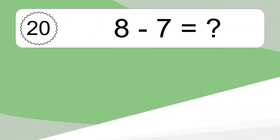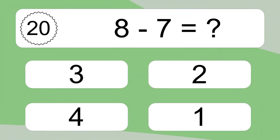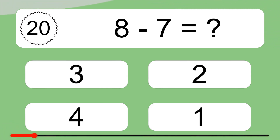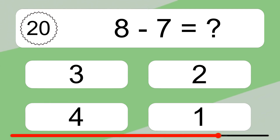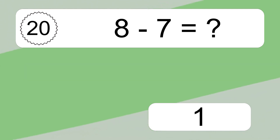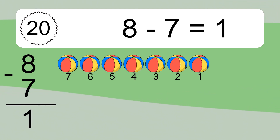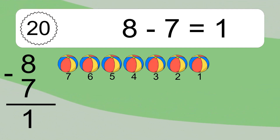8 minus 7 equals what? 8 minus 7 equals 1. Let's count it: 7, 6, 5, 4, 3, 2, 1.